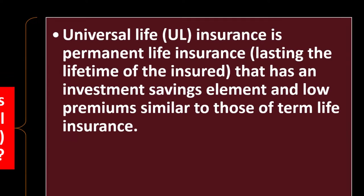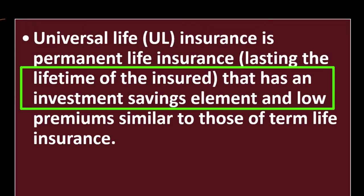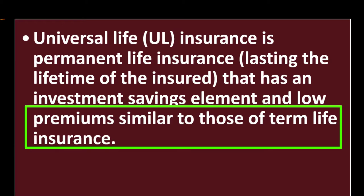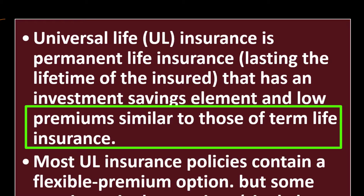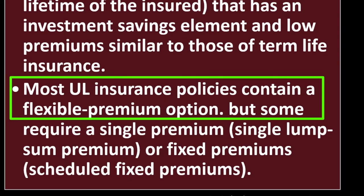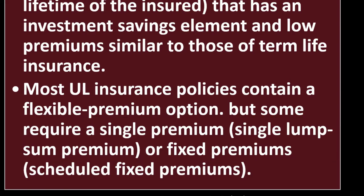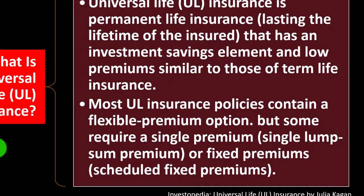Universal life or UL insurance is permanent life insurance — as opposed to term life insurance — lasting the lifetime of the insured, that has an investment savings element and low premiums similar to those of term life insurance. Most UL insurance policies contain a flexible premium option, but some require a single lump sum premium or scheduled fixed premiums.